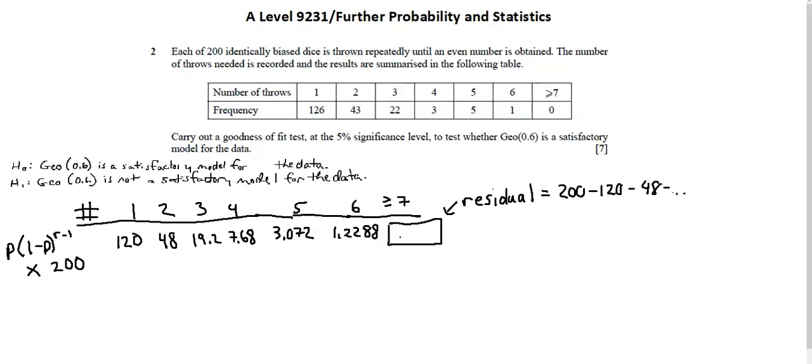And I get 0.8192. That is not, important to note, not coming from using r equals 7 in the geometric expression. It's coming from 200 minus the other calculations so that now all of those calculations sum to exactly 200.